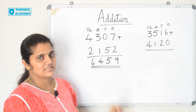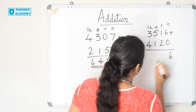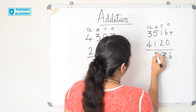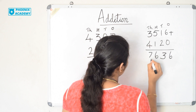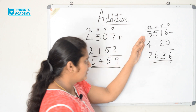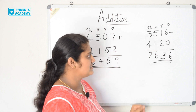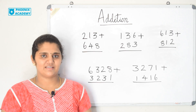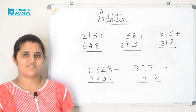Let us solve this example too: 3,516 plus 4,120. 6 plus 0 is 6. 1 plus 2 is 3. 5 plus 1 is 6. 3 plus 4 is 7. So 3,516 plus 4,120 is 7,636. Hope you understand the session. Can you try these examples? We will see you in the next class. Thanks for watching.